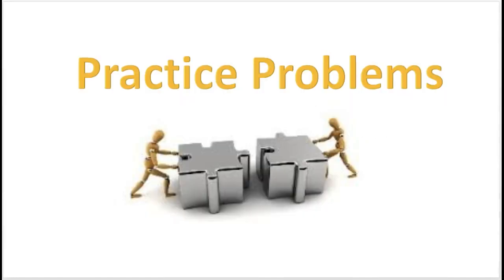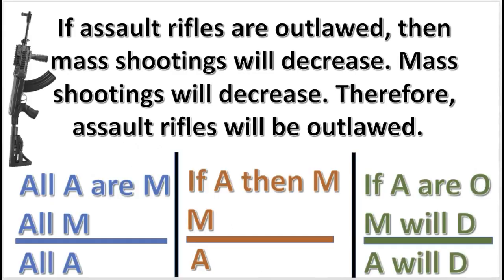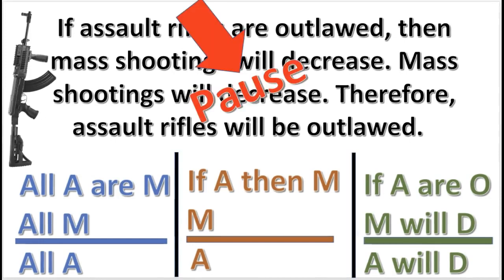Now here are your practice problems, which are absolutely necessary. Let's do some practice problems involving conditional statements and other argument forms. Here's the first practice problem — listen to this argument: If assault rifles are outlawed, then mass shootings will decrease. Mass shootings will decrease. Therefore, assault rifles will be outlawed. What is the argument form of this argument? Go ahead and press pause, write down your answer, and then press play — I'm going to give you the answer in three, two, one.